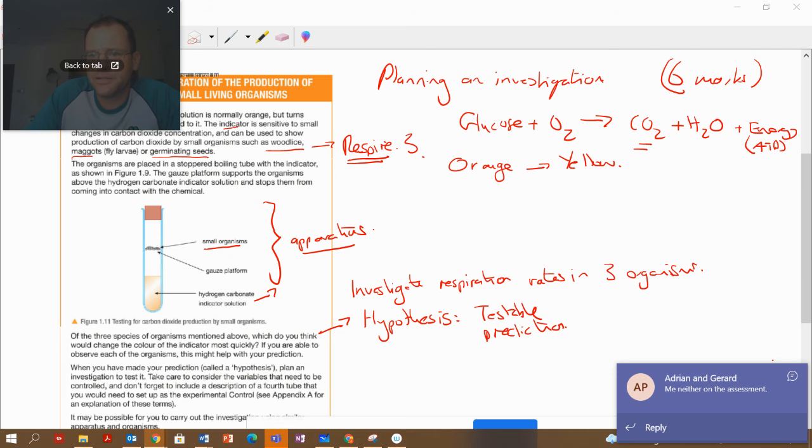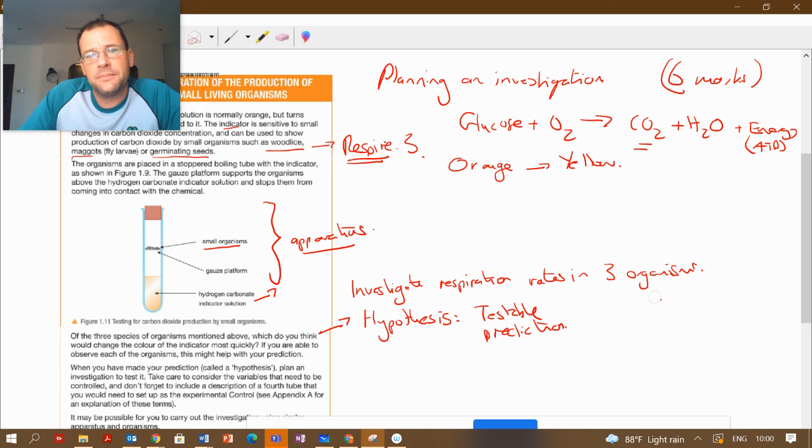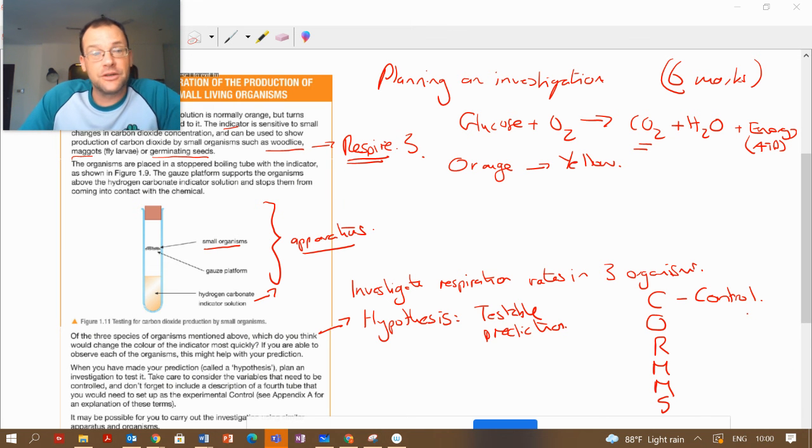If we were going to just move myself over here, give ourselves a little success criteria about how do we answer this six mark question. There's a nice easy way when we call it CORNS.